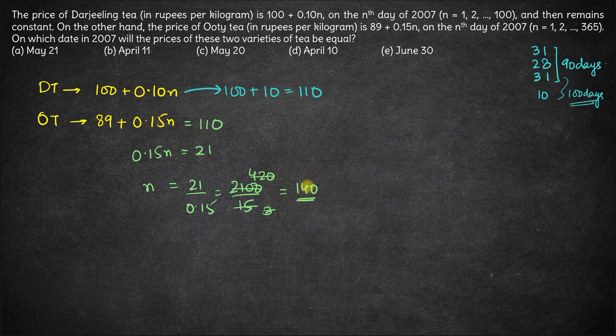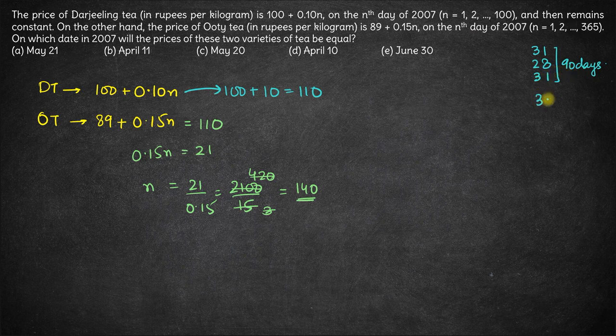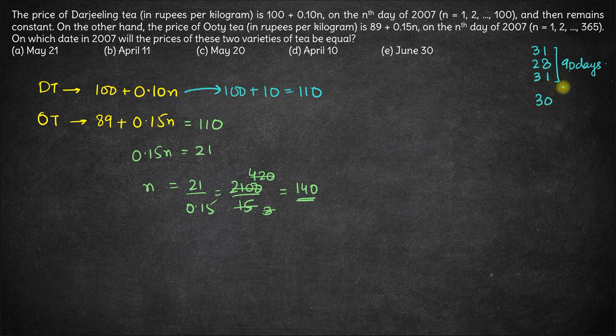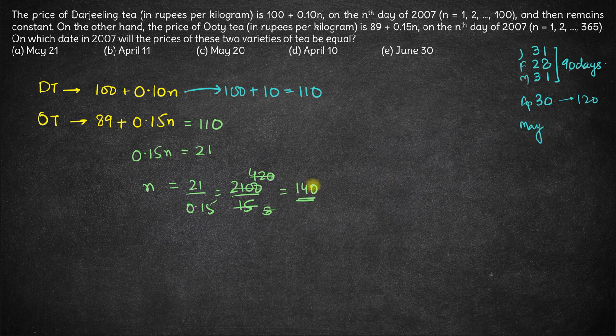If n is 140 days, prices will become equal at the end of 140 days. Let's see what is the date after 140 days. We know January, February, March have 90 days. April will have 30. So 90 + 30 is 120 days so far. That means this is Jan, Feb, March, April.